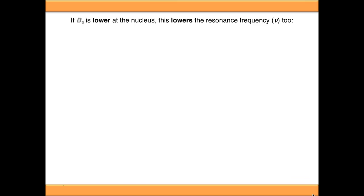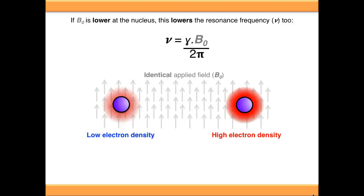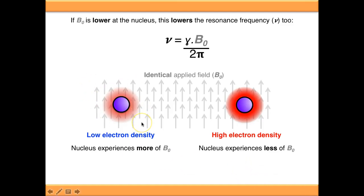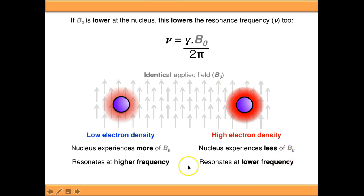If B0 is lower at the nucleus, this lowers the resonance frequency, in line with the equation shown above. So if we have a nucleus which has low electron density around it, the nucleus experiences more of B0. And if we have a nucleus which has high electron density, it experiences less of B0. As a result, the low electron density nucleus resonates at a higher frequency, whereas the high electron density one resonates at a lower frequency. And this is what we call colloquially deshielding and shielding.